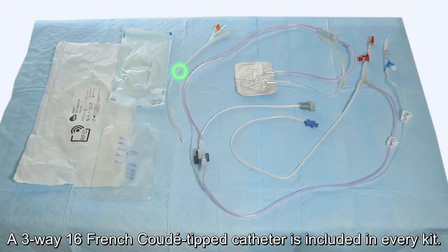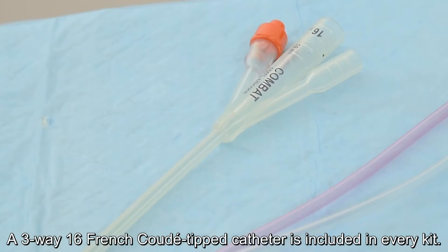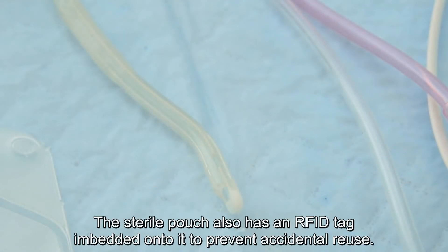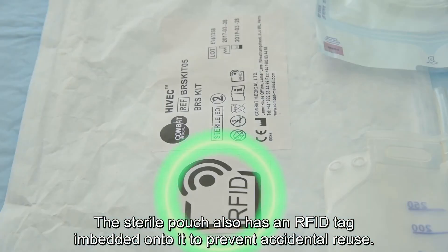A three-way 16 French coude tipped catheter is included in every kit. The sterile pouch also has an RFID tag embedded onto it to prevent accidental re-use.